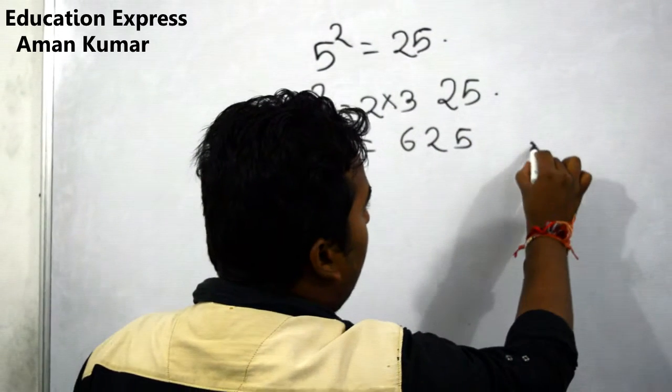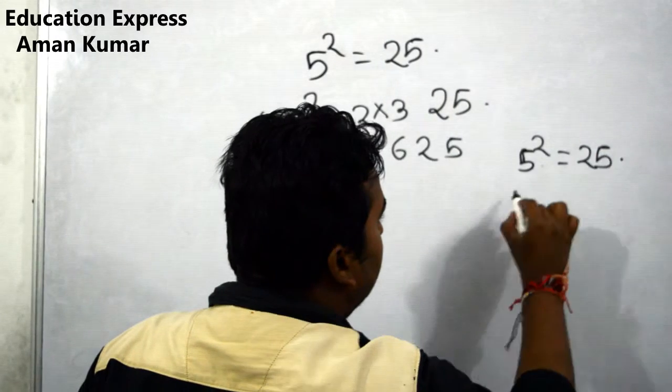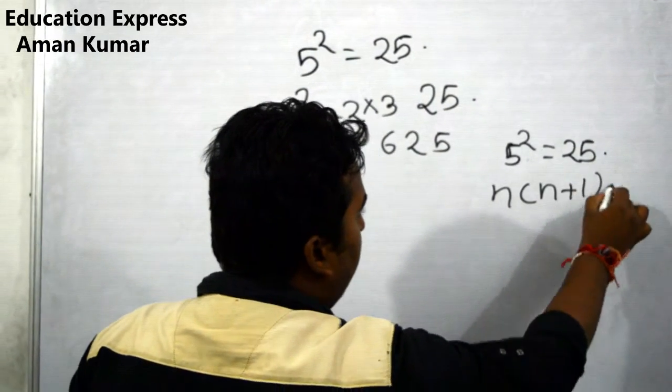First, square of 5 equals 25, then n into n plus 1.